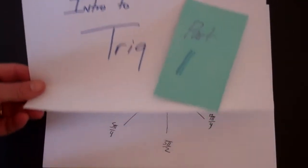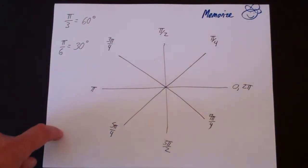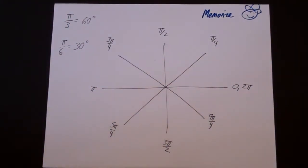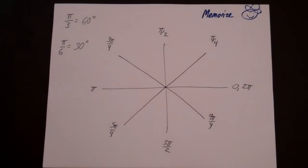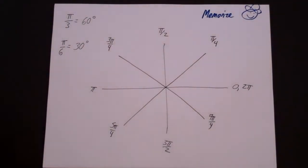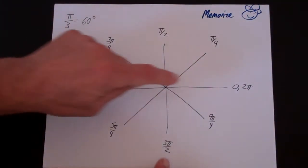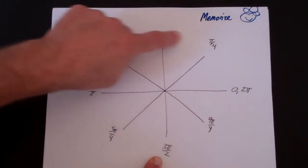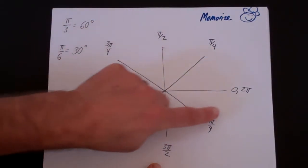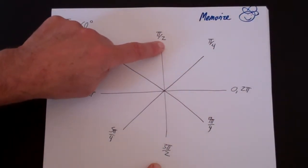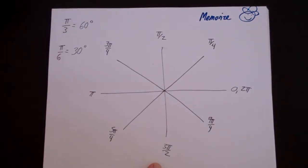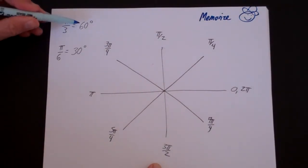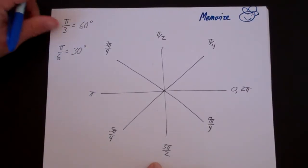The first thing I want you to do is make sure to have this memorized. We want to memorize the different radian measures, and I went over this in the previous video. A circle is 2 pi, half a circle is pi, and half of that is pi over 2. There are two additional ones to memorize: pi over 3 is 60 degrees, and pi over 6 is 30 degrees.